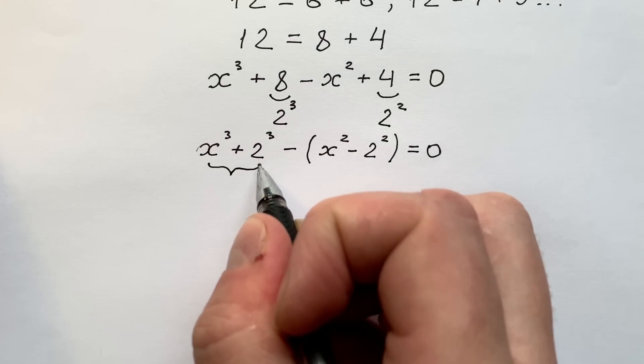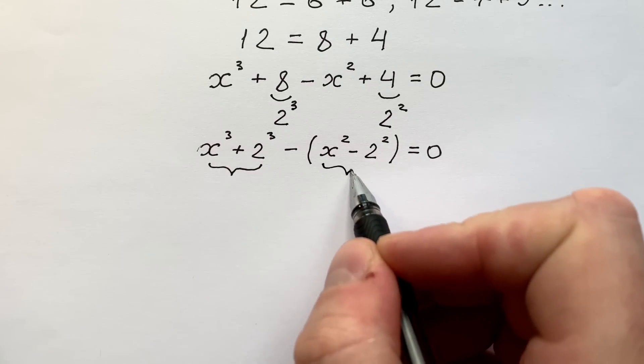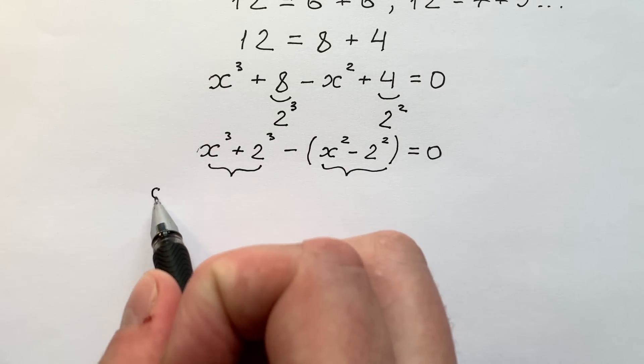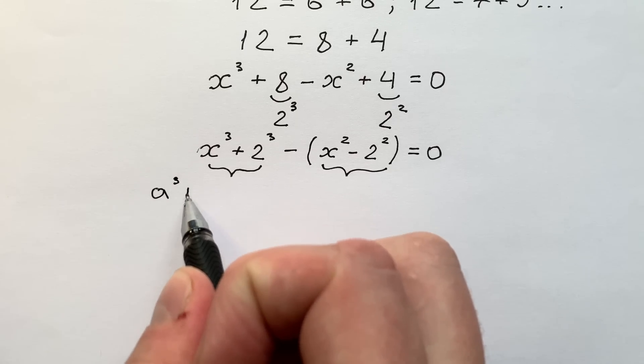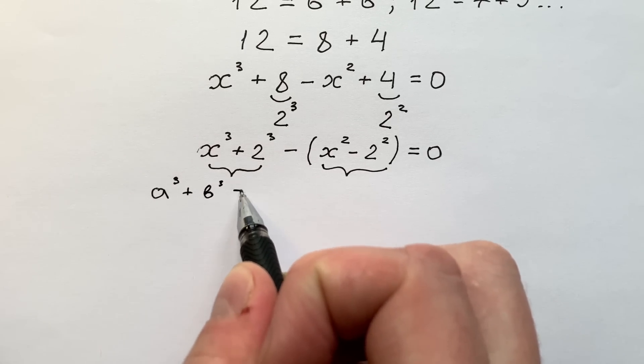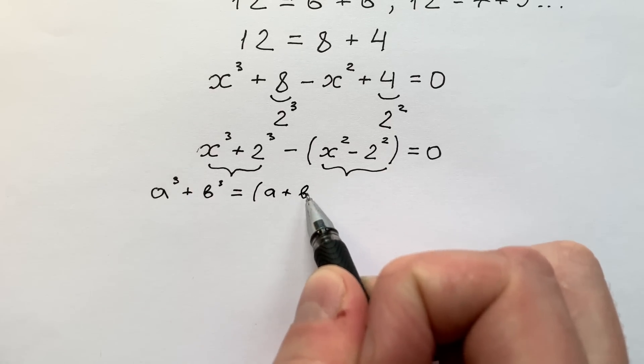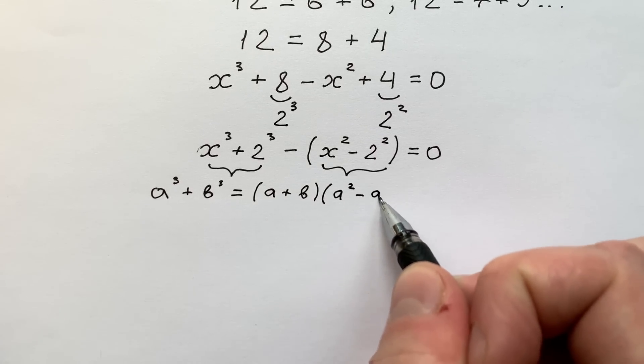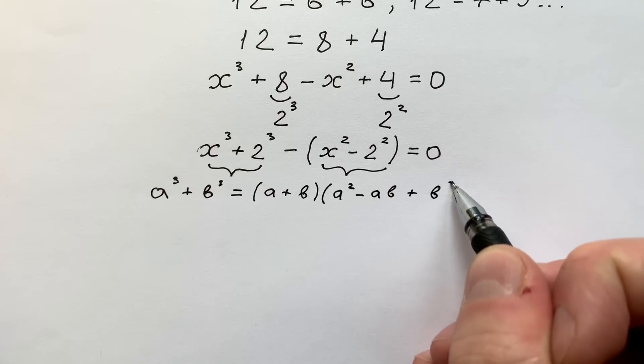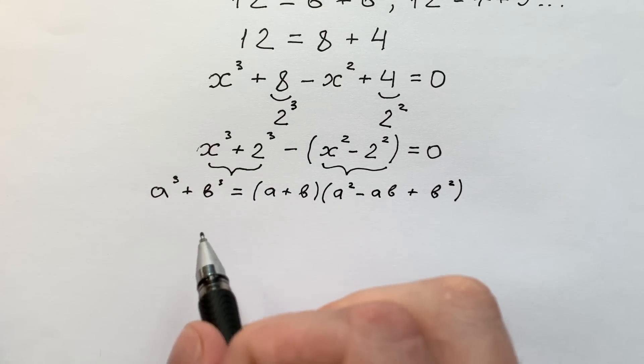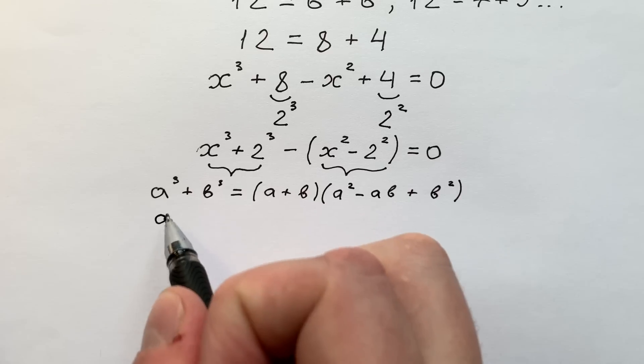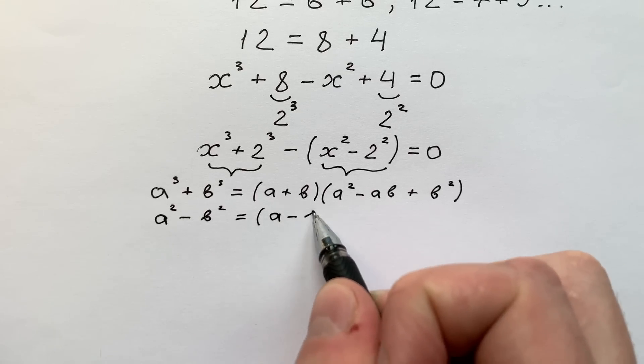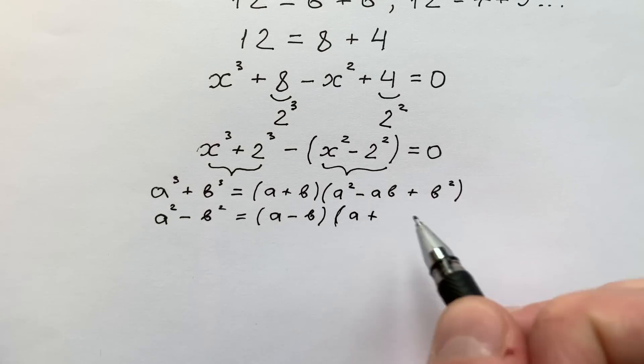There is sum of cubes and here it is difference of squares. Using their basic formulas, we can write like a to the power of 3 plus b to the power of 3 equals bracket a plus b times a squared minus a times b plus b squared. This is sum of cubes. But difference of squares we can also write like bracket a minus b times a plus b.